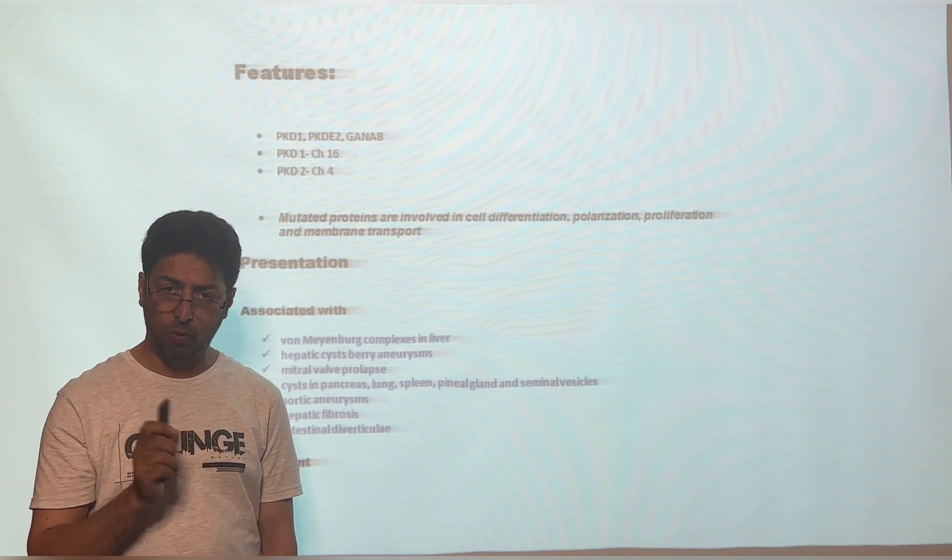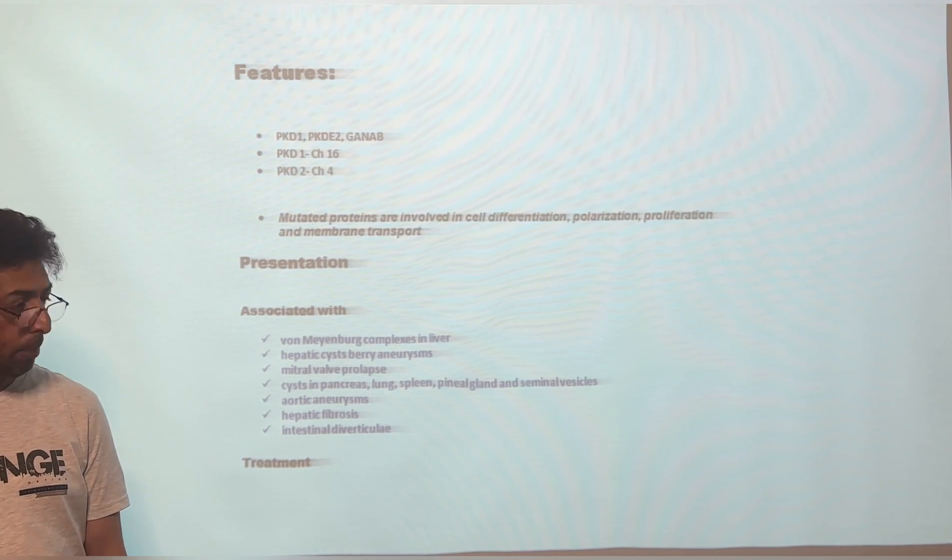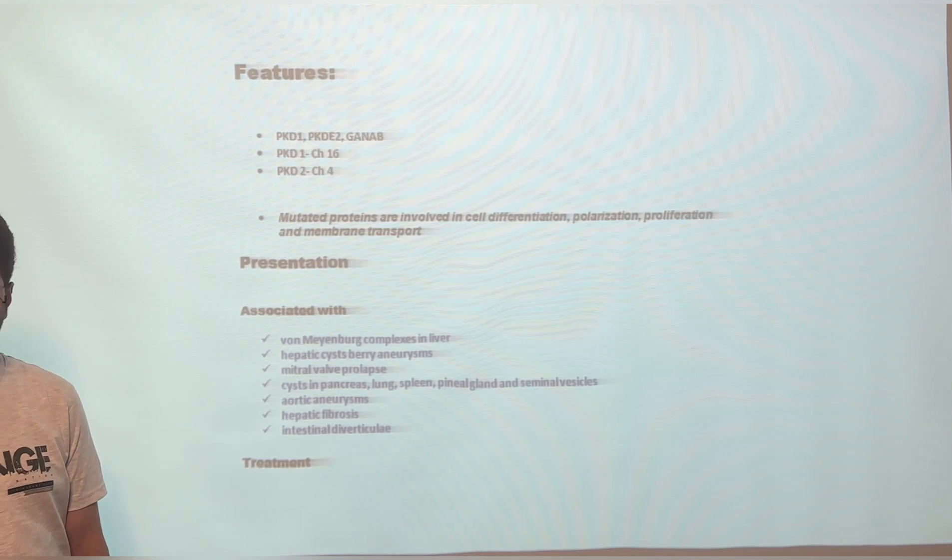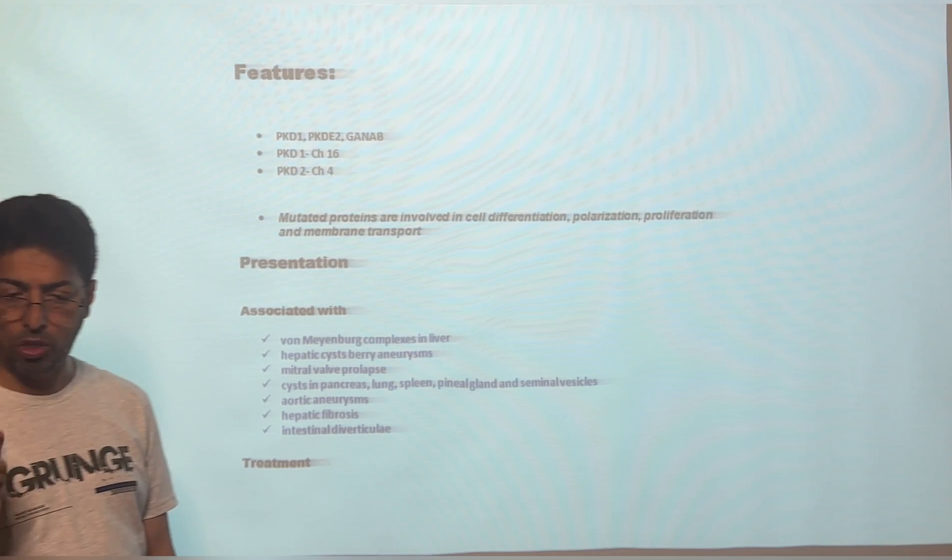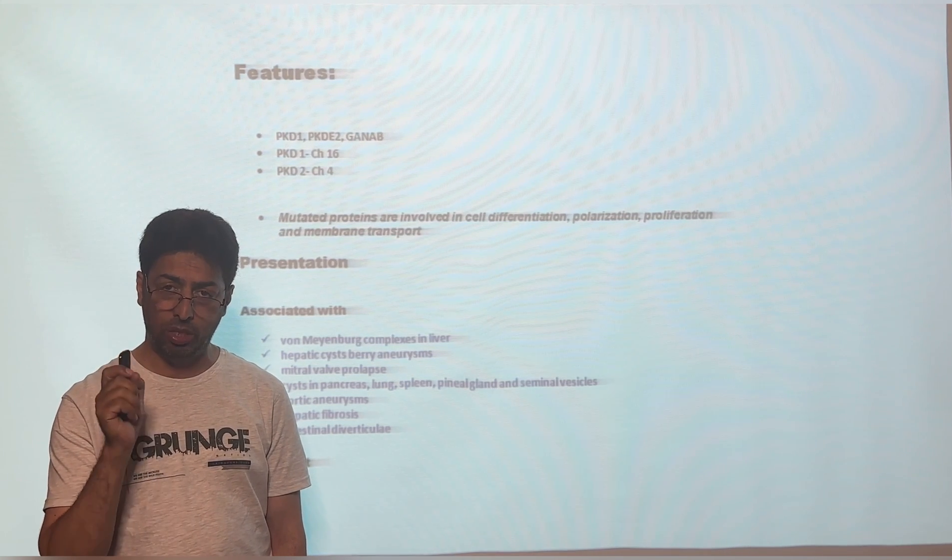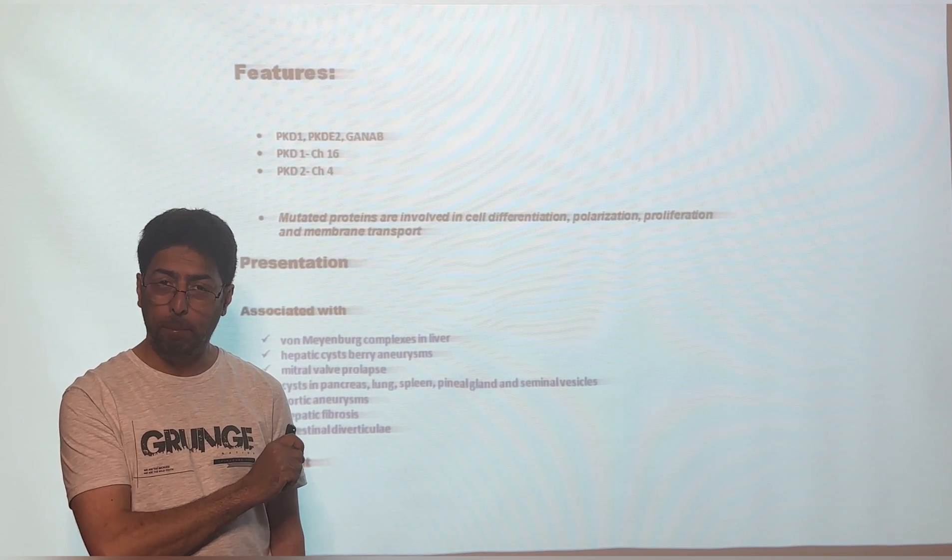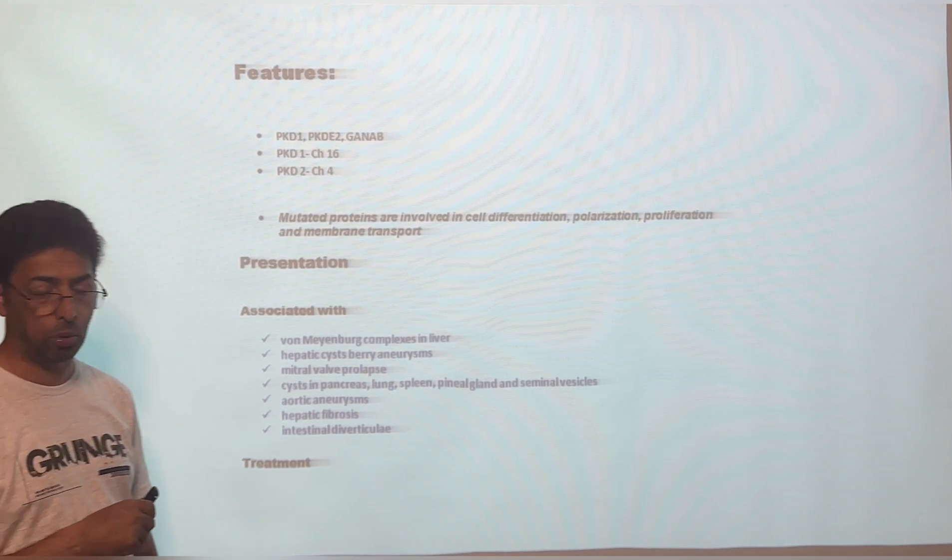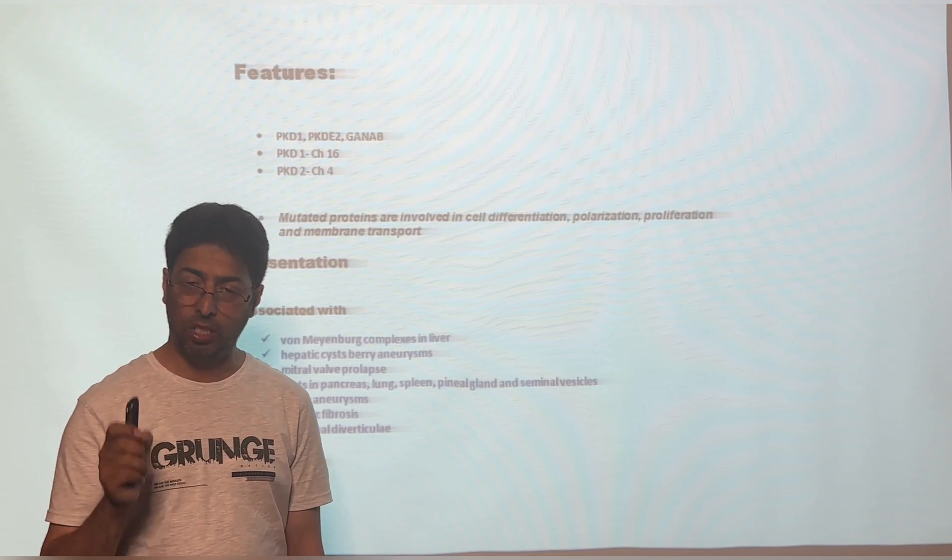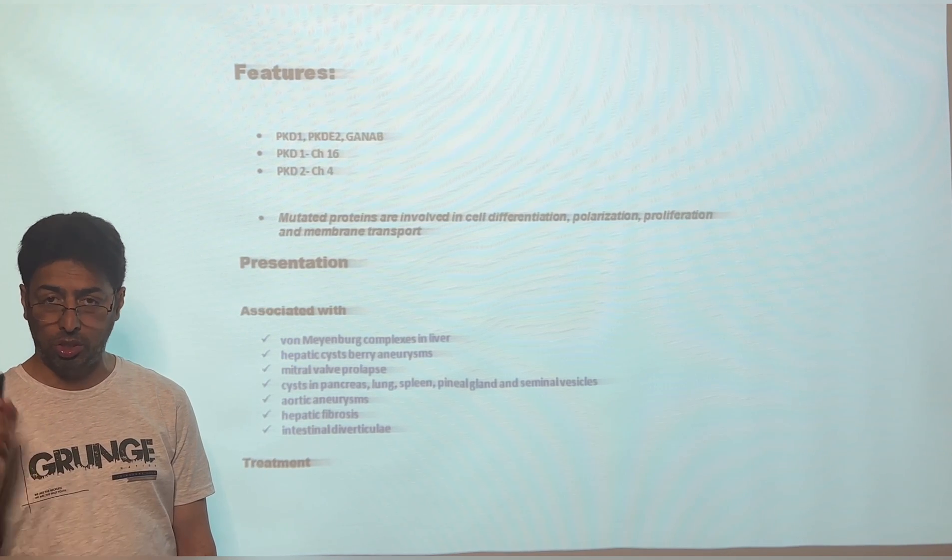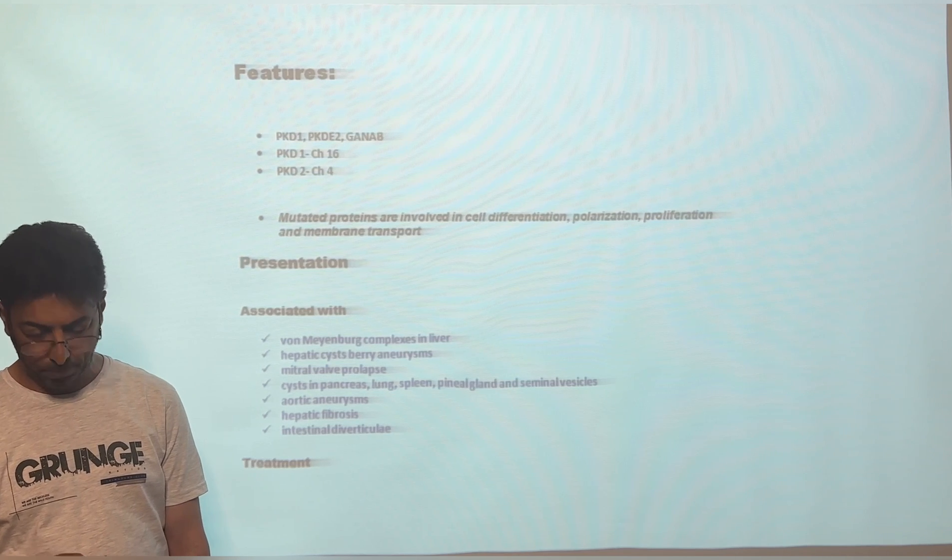So over here, you have to be very careful of at least screening for the Berry aneurysms and the aortic aneurysms. In addition, very important from a GI perspective is the presence of intestinal diverticula. The diverticula disease is very common in patients of polycystic kidney disease. One important association is hepatic fibrosis. That is very important as far as the polycystic kidney disease is concerned. So you have to remember all these associations. A question very frequently asked.